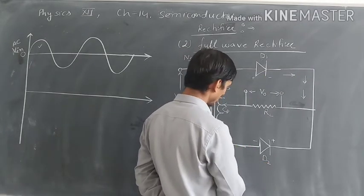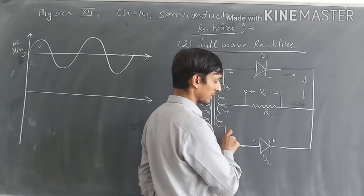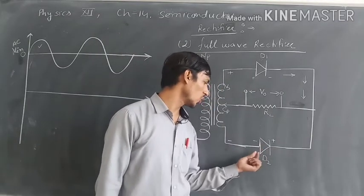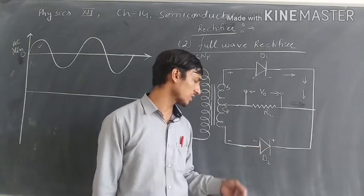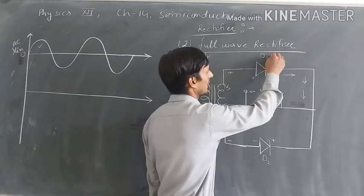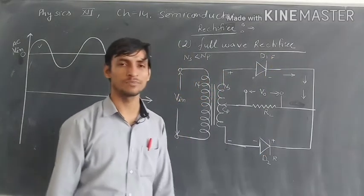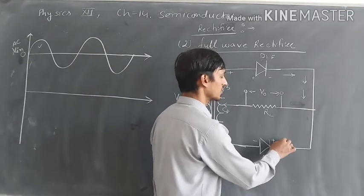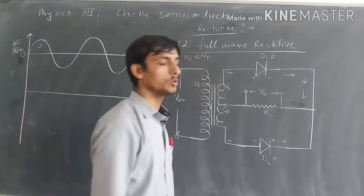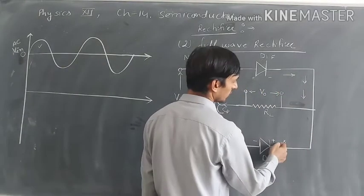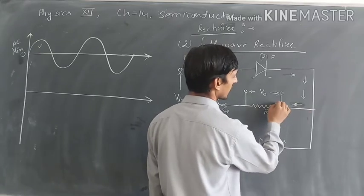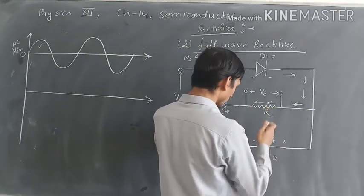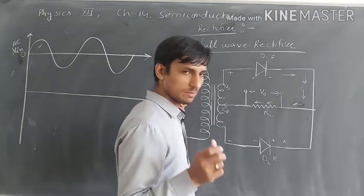For the second diode, this is the negative potential, so P is connected at lower potential — yeh negative se connected hai, yeh positive se connected hai — toh yeh reverse bias mein aa gaya. Jab yeh reverse bias mein hoga, to yahan se koi bhi current flow nahi hogi, is direction mein ya is direction mein. Toh current is direction mein jayegi, is RL ke through. Toh joh V input tha uske respect mein aapko output bhi mil jayega.